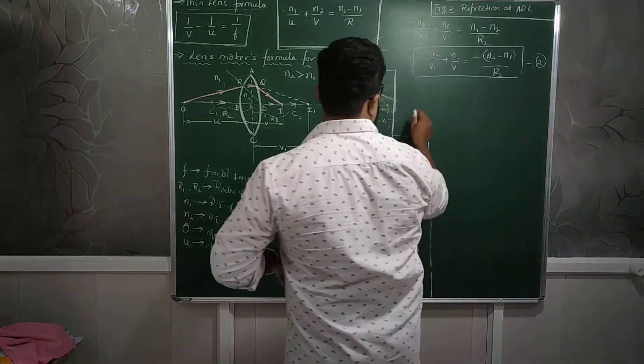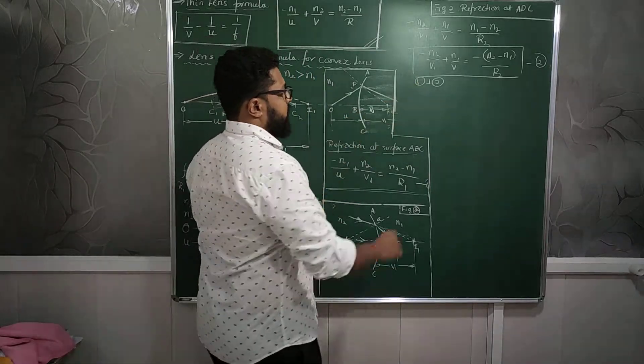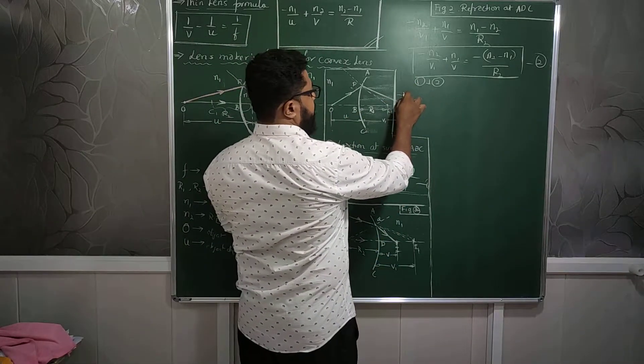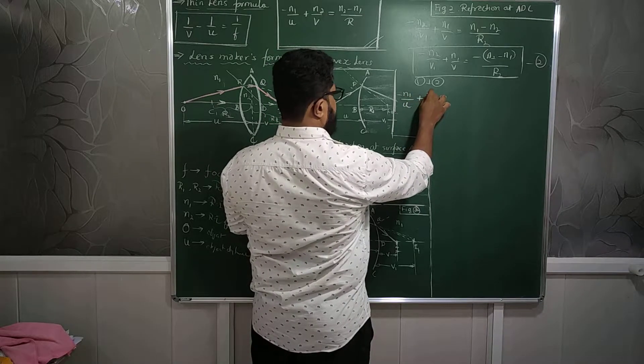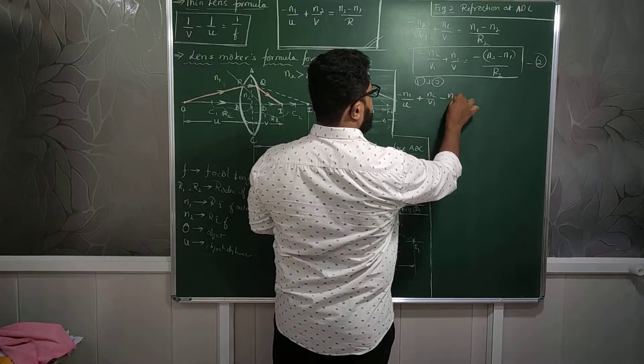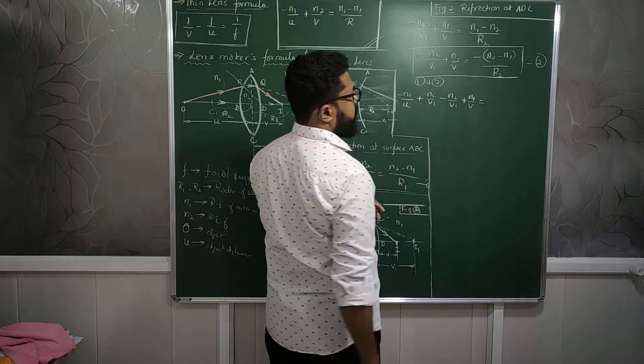So now I will add equation number 1 and 2. This equation and that equation I am adding. The left hand side will look something like this: N1 divided by U plus N2 divided by V1 minus this less this. The left hand side will do something like this.